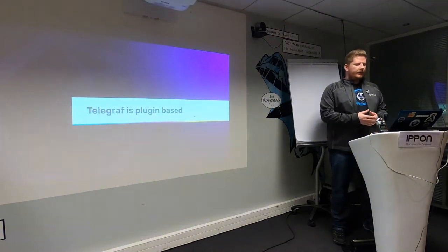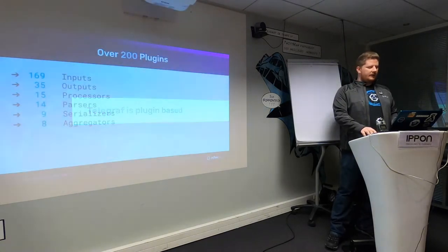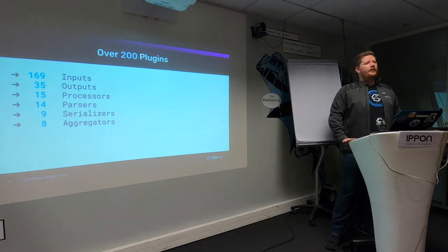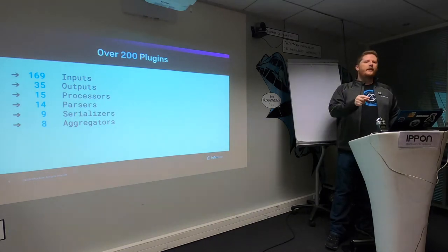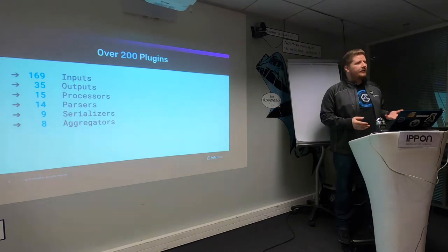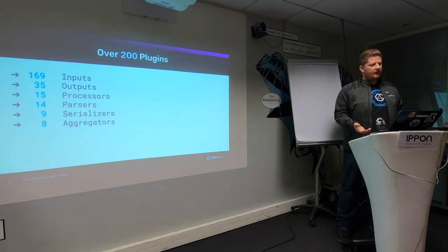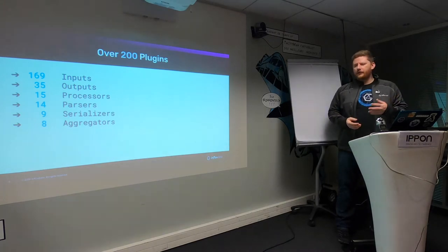Telegraph is plugin-based. There are currently a lot of plugins — 169 input plugins in fact, and I think it's now higher than that. Input plugins means Telegraph knows 169 pieces of software it can go and get metrics from, and hopefully that covers most of the software you're using in your infrastructure. On the output side, it can write to over 35 locations — that could be InfluxDB, Prometheus, Datadog, and so forth.